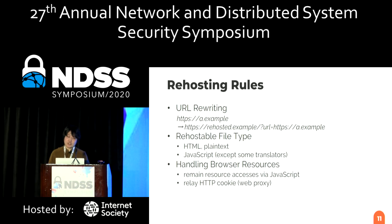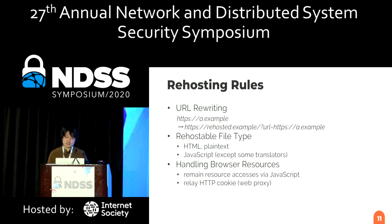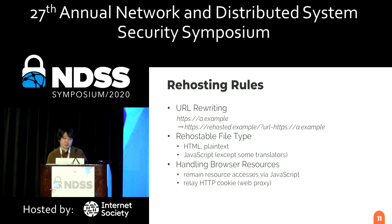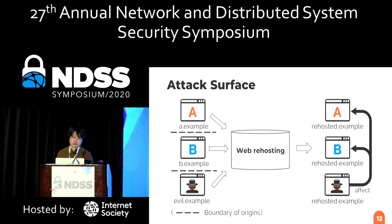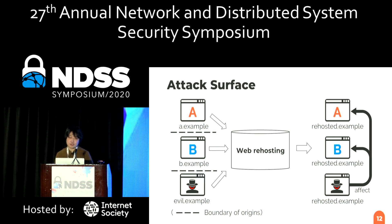The second rule is rehostable file types — all services support HTML and plain text, but some translators do not support JavaScript files. The third is how web rehosting handles browser resources: JavaScript code to access browser resources remains, but its origin will be changed to web rehosting. Some web proxies support website login functions by relaying HTTP cookies. With exploiting that architecture, a third-party attacker can intentionally place malicious content on the origin of web rehosting, and all five attacks are backed by this common security flaw.